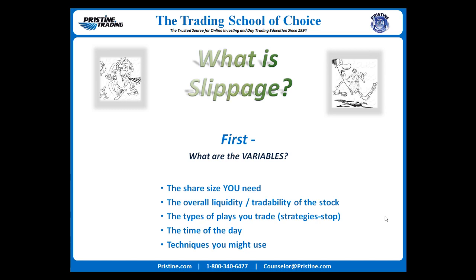The next biggest issue is the tradability of the stock, which is based on the total liquidity of the stock. Some stocks trade many millions of shares a day, and some only trade a few thousand. Other variables include the types of trades that you do, the time of day that you enter, and other techniques that can be used.